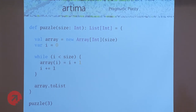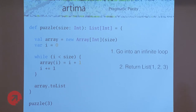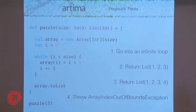I'll give you a multiple choice to make it slightly simpler. Does it: one, go in an infinite loop? Two, return list one, two, three? Three, return list one, two, three, four — an off-by-one error, maybe? Or four, throw an ArrayIndexOutOfBoundsException, which barely fit on the slide.